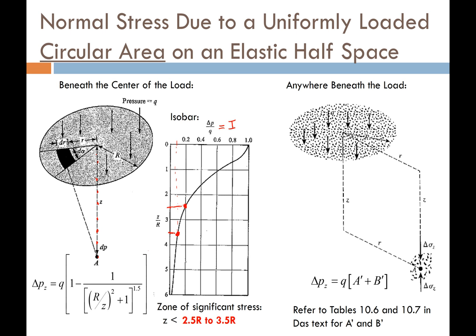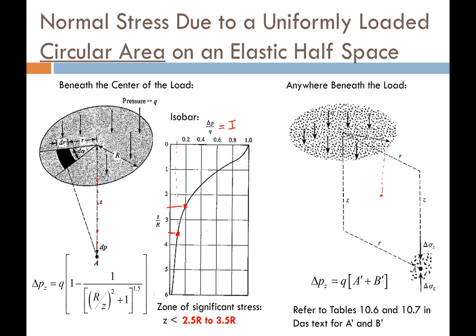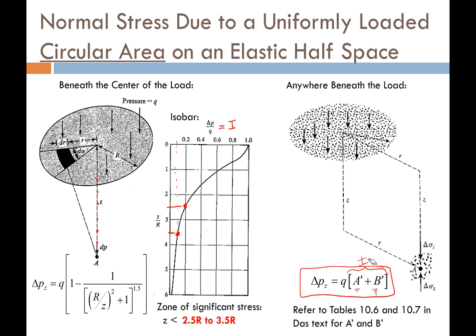If you want a point that is not beneath the center of the load — maybe beneath the edge or outside the footprint of the circular load — we can use an equation where the influence factor is a function of A-prime and B-prime. We can get those from tables 10.6 and 10.7 in the DOS textbook for the class.